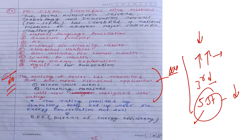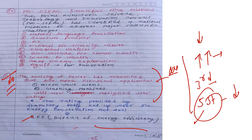Star ratings are provided by BEE — the Bureau of Energy Efficiency. Previously, ACs and refrigerators had star ratings. From March 2019, microwave ovens and washing machines must also carry BEE star ratings. A practice question on this topic has been posted on the GS community.